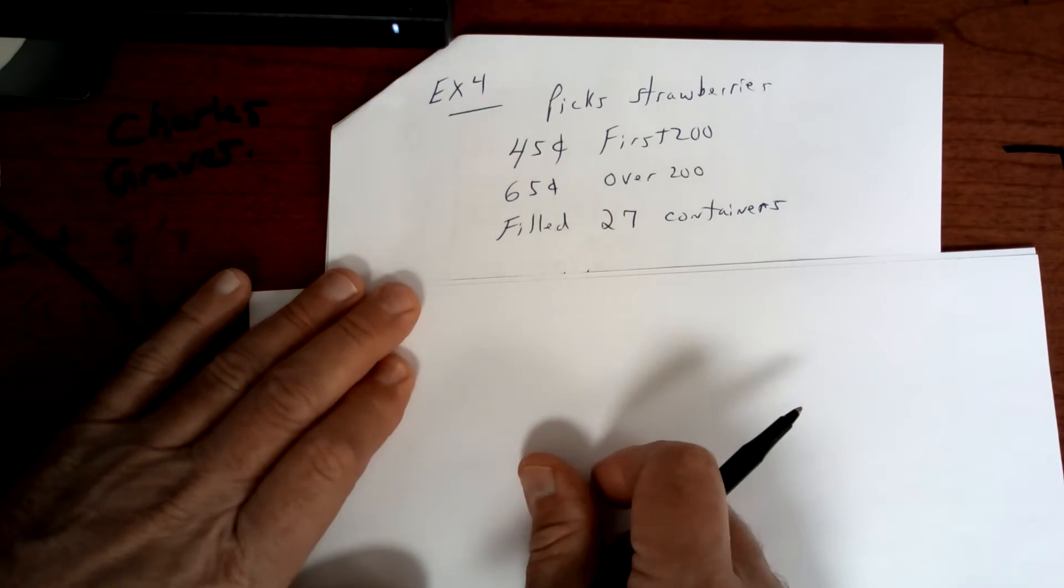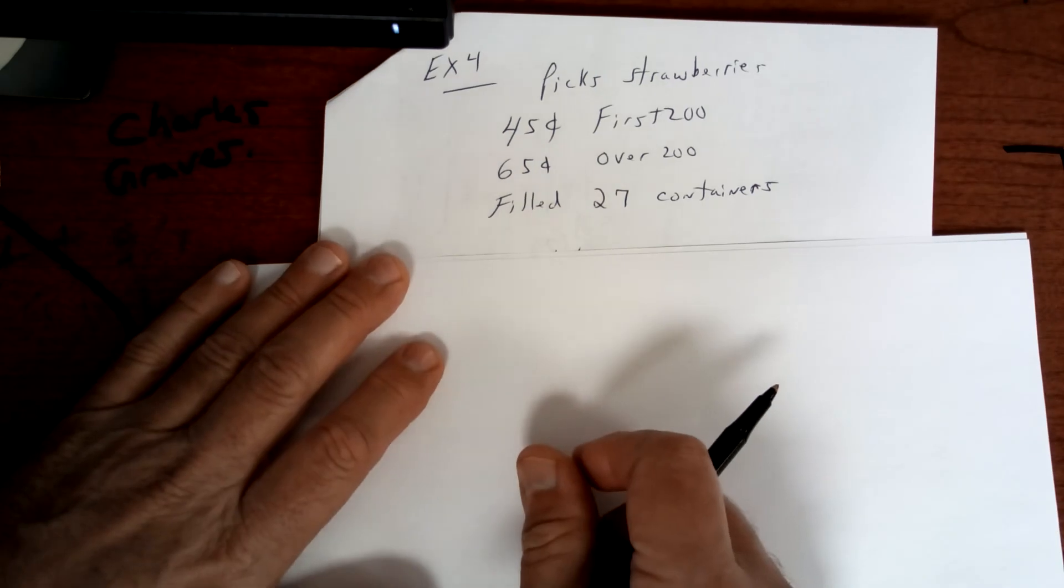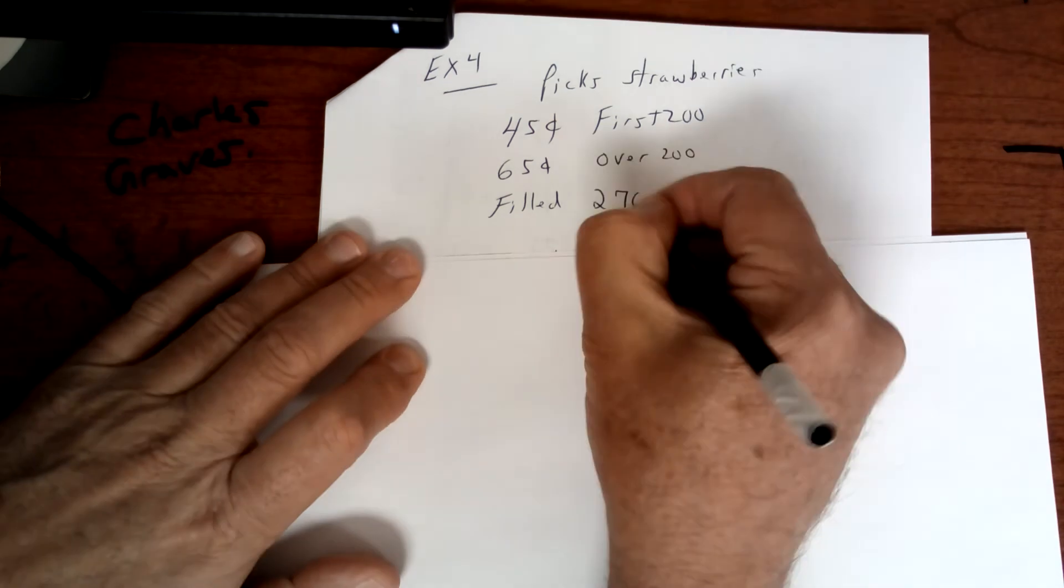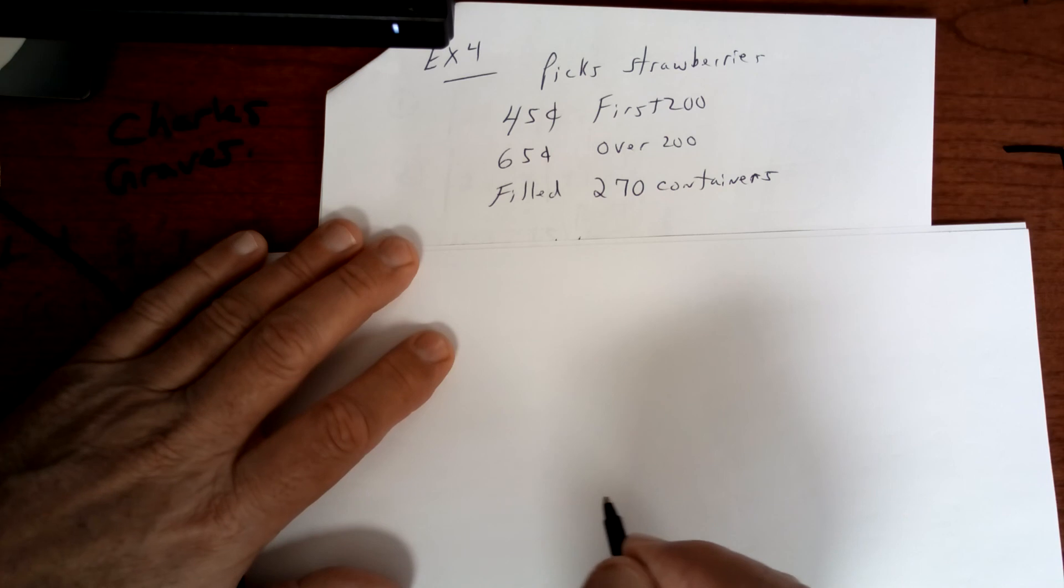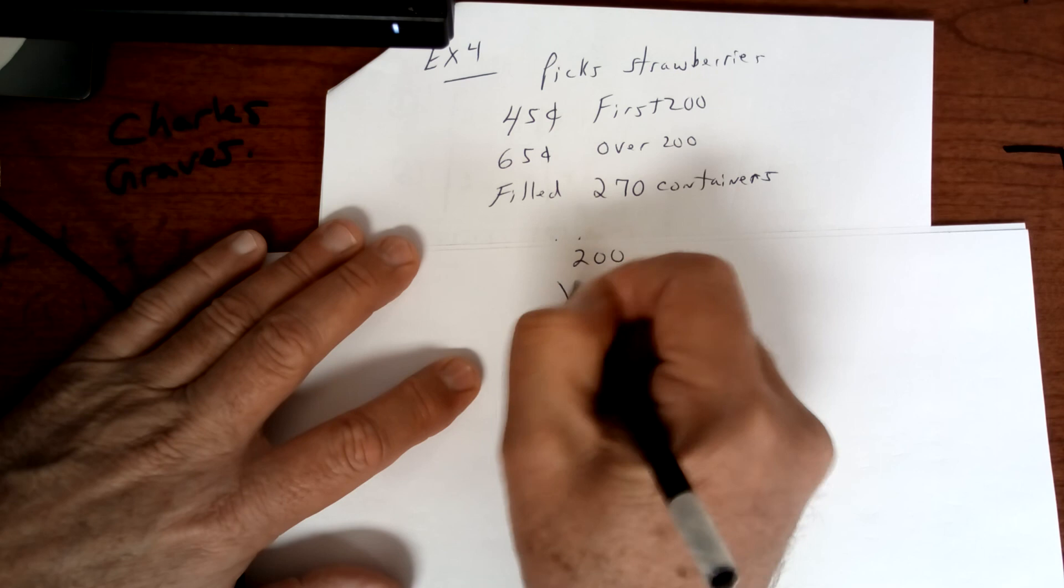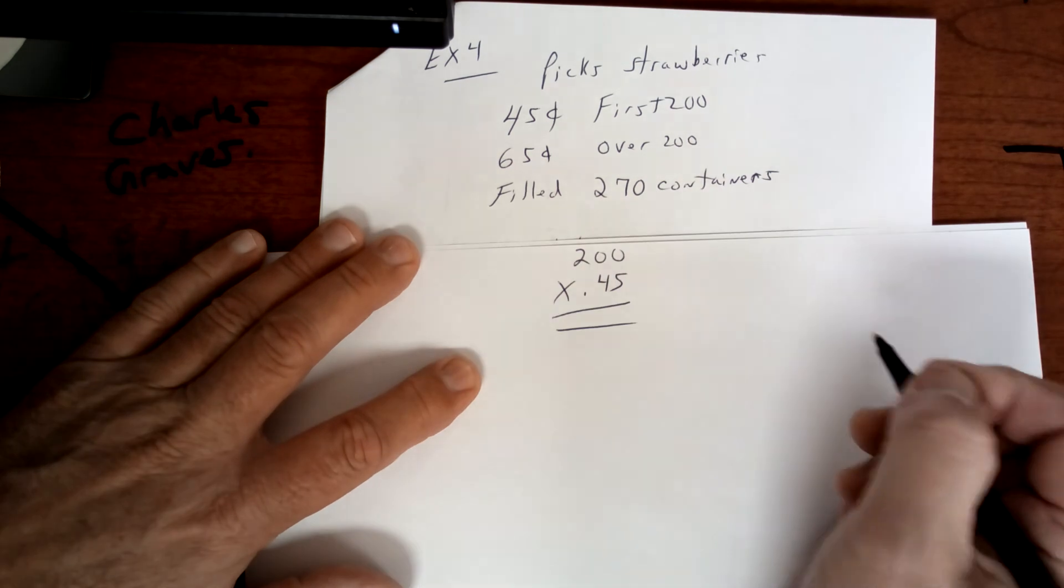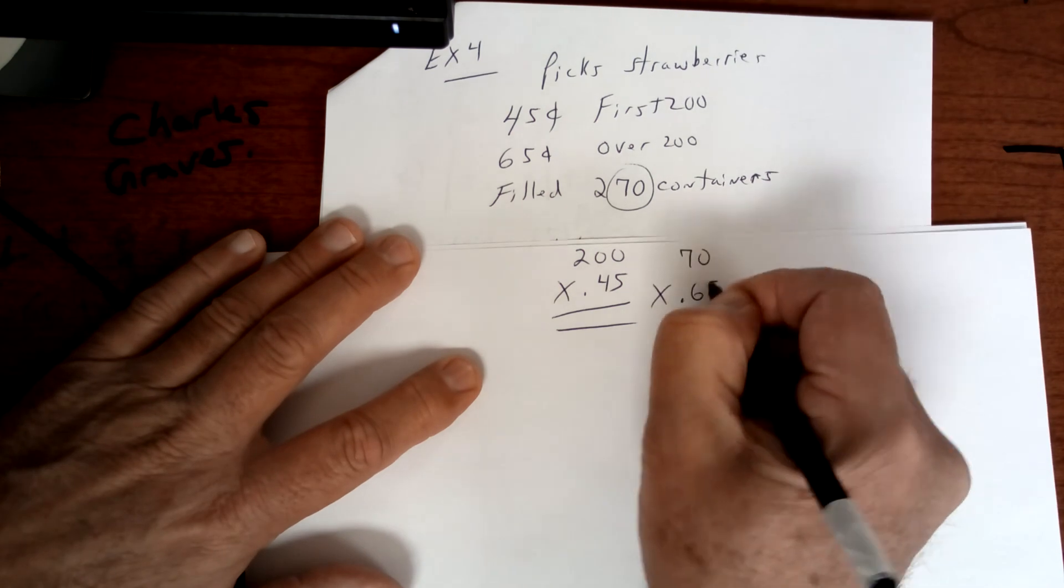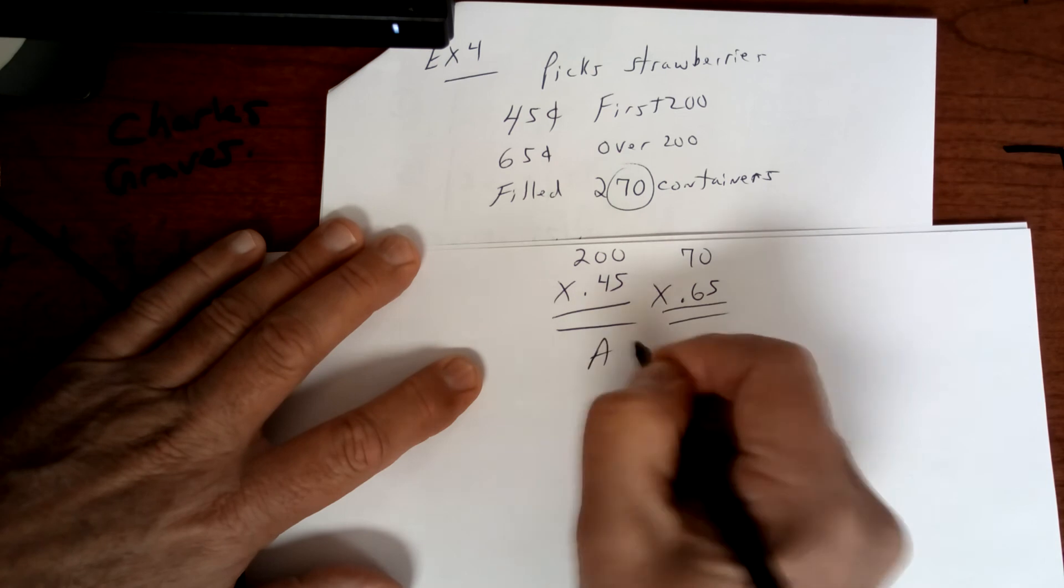Last one we're going to do today is this one. Let's say you have a strawberry farm and you pay the workers $0.45 for the first 200 containers and $0.65 for over 200. I'm going to say this is 270 containers. You're going to take the first 200 times 0.45 and then you're going to take anything over that, which is 70 containers, times a higher rate, 0.65. You're going to add up A plus B and you're going to get your answer.